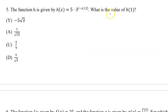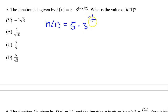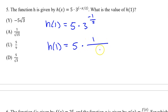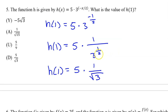Number 5 is a little bit different. It says: what is the value of h at 1? So h(1) means we plug in 1 for x, giving us 5 times 3 to the negative 1 half power. A negative exponent drops you down to the denominator, so we have h(1) equals 5 times 1 over 3 to the 1 half power. Since 3 to the 1 half power is the square root of 3, we now have 5 times 1 over radical 3, which gives 5 over radical 3. The answer is D.